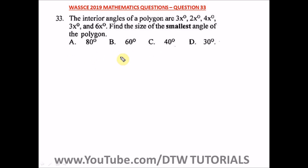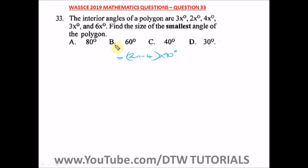What is the sum of the interior angles of a polygon? The sum of the interior angles of a polygon is equal to (2n − 4) × 90 degrees. So we equate the given angles to this formula.